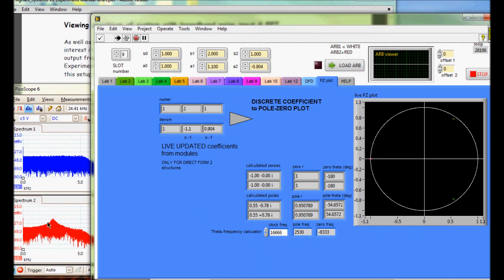Changing A1 for example, you can see the frequency of the peak of the filter moving left and right.